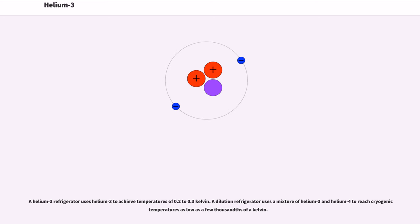A helium-3 refrigerator uses helium-3 to achieve temperatures of 0.2 to 0.3 Kelvin. A dilution refrigerator uses a mixture of helium-3 and helium-4 to reach cryogenic temperatures as low as a few thousandths of a Kelvin.